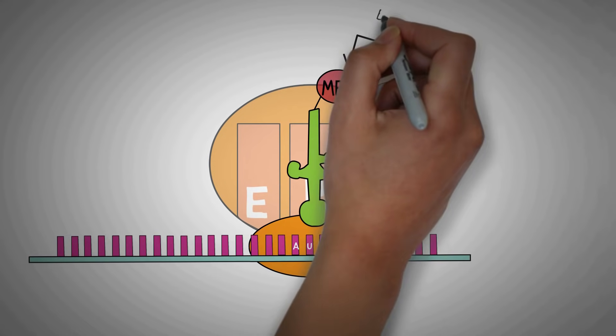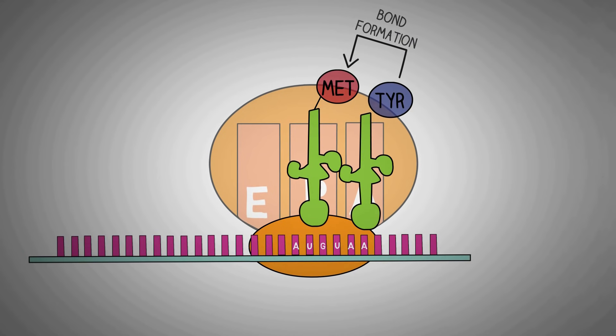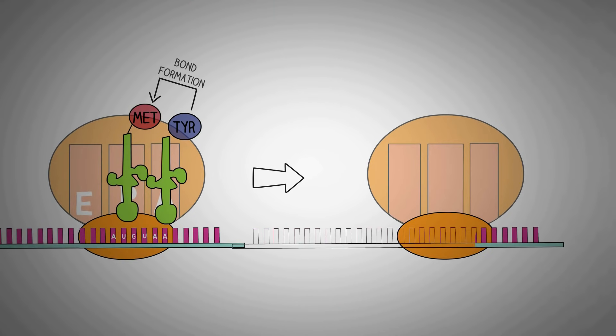So, what we need next is to form a bond between the amino acid on the tRNA in the P site and the amino acid on the tRNA in the A site. After this, the tRNA in the P site loses its amino acid and becomes empty.